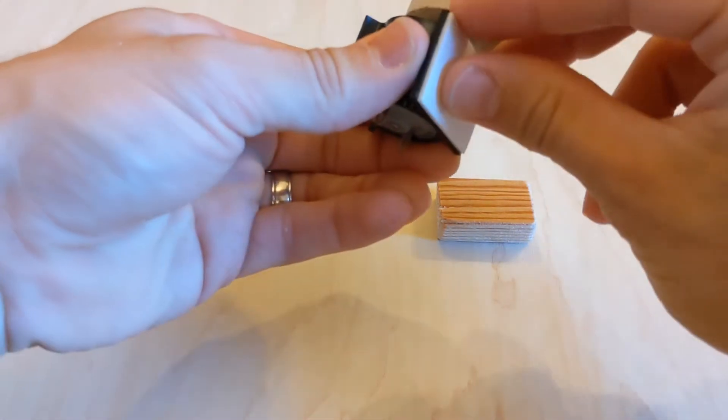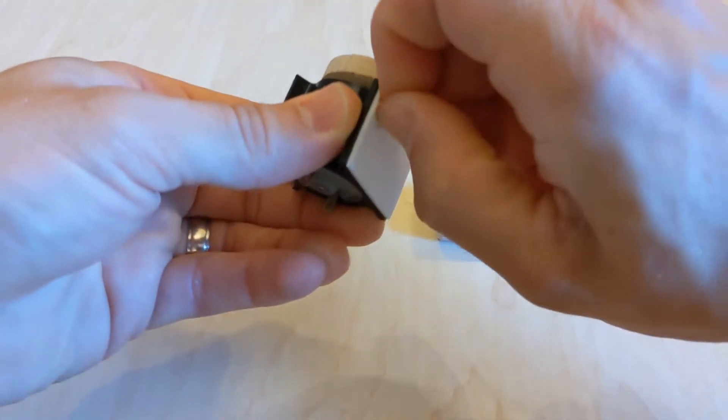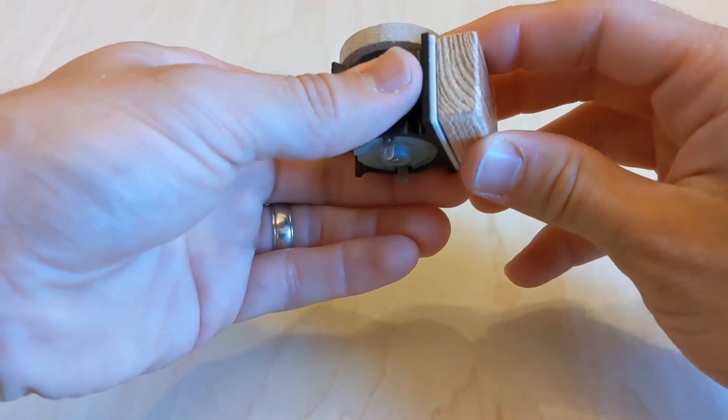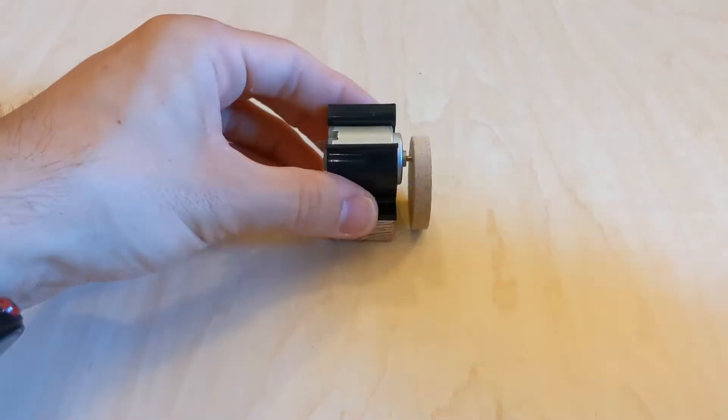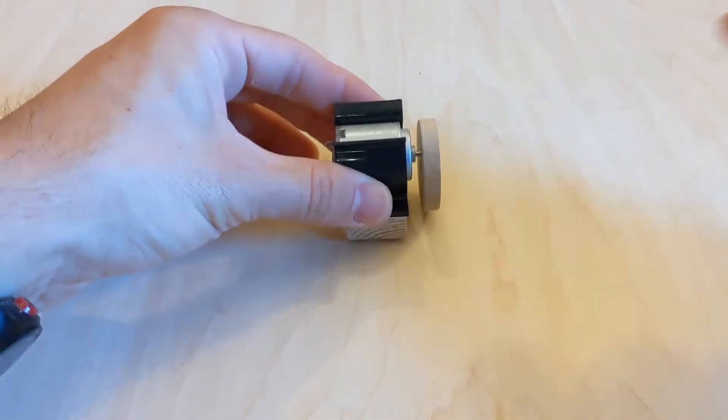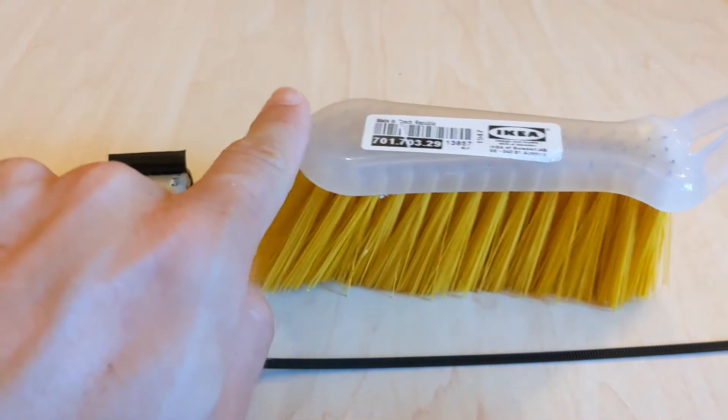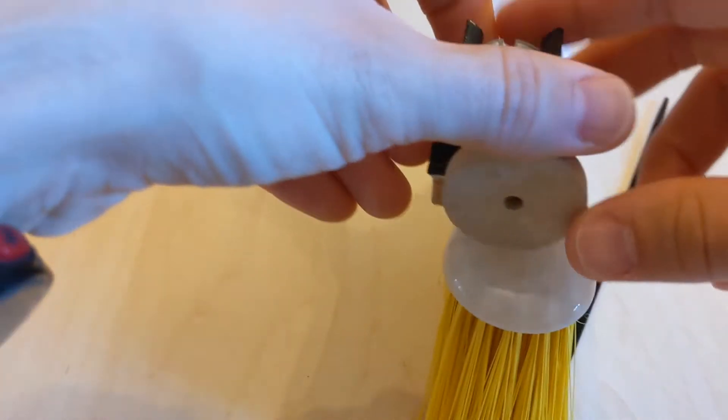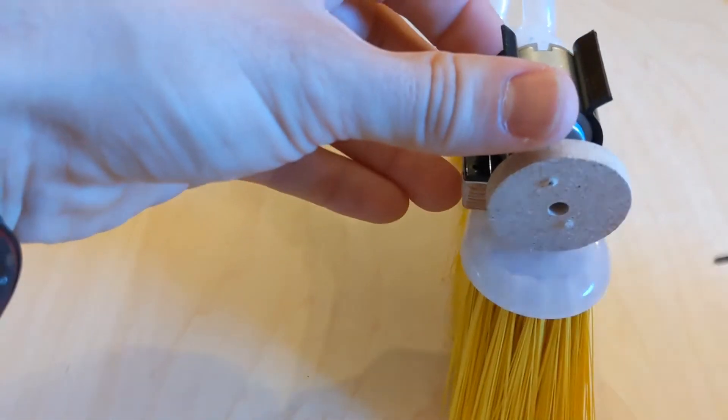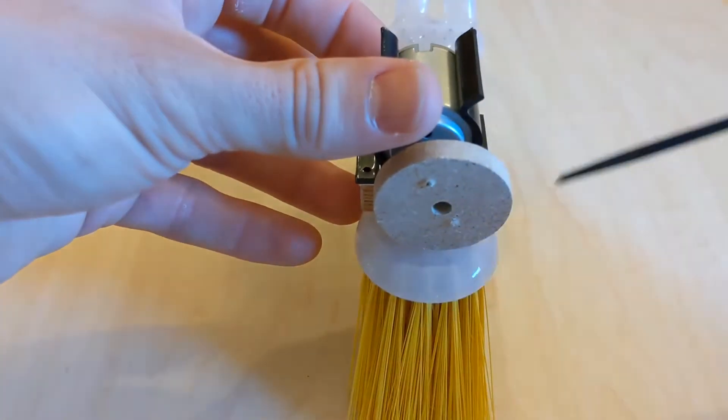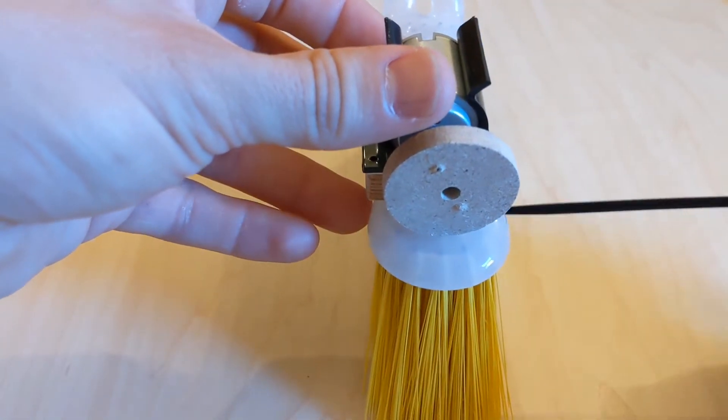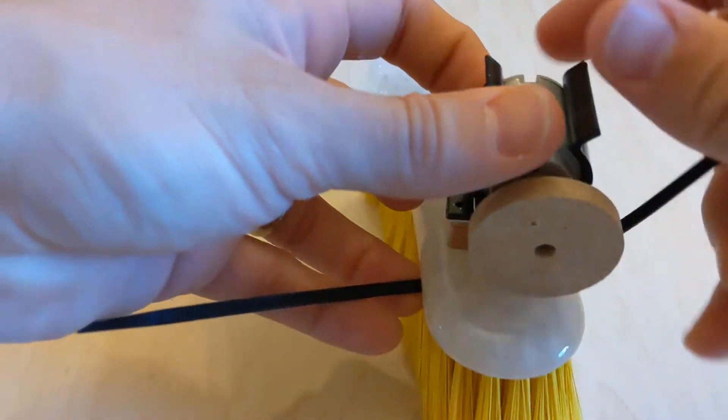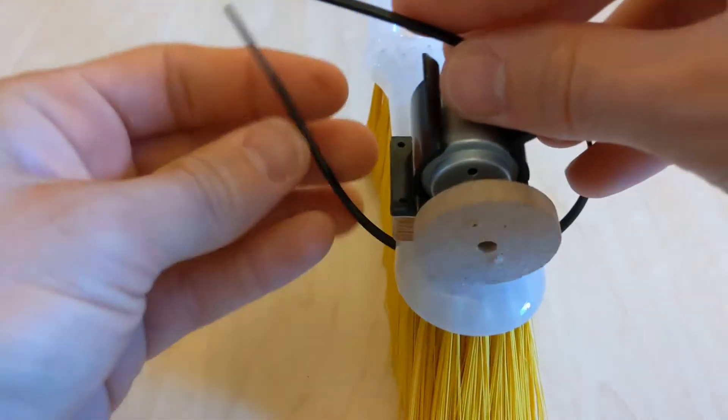Once you've done that, remove the protective film off the bottom of the motor mount and stick it onto the spacer. Next, measure a centimeter in from the back of the brush and using one of the long cable ties, slide it underneath the brush, through the bristles, and up over the top of the motor mount to secure the motor in place.